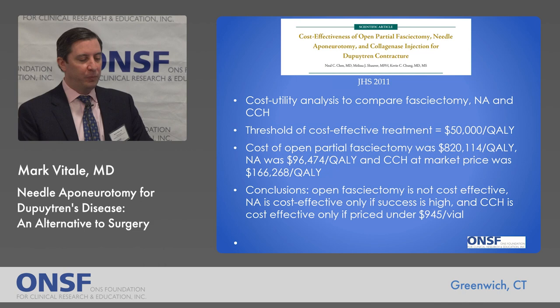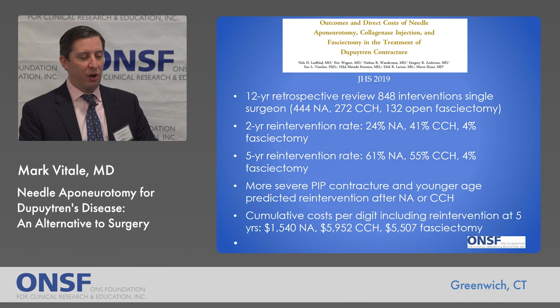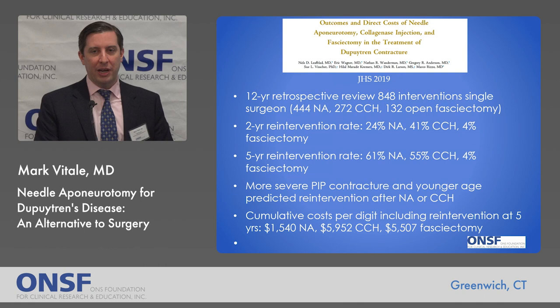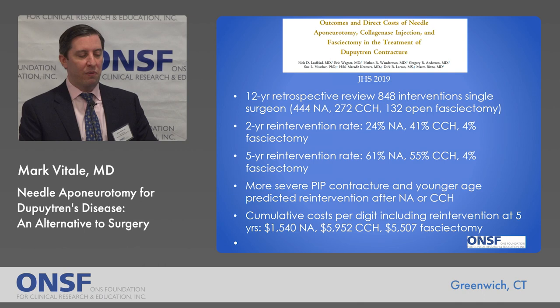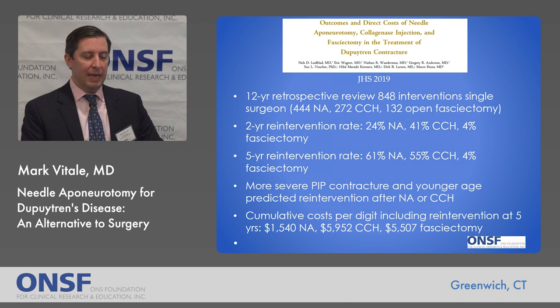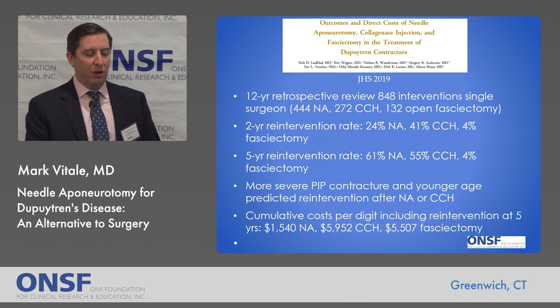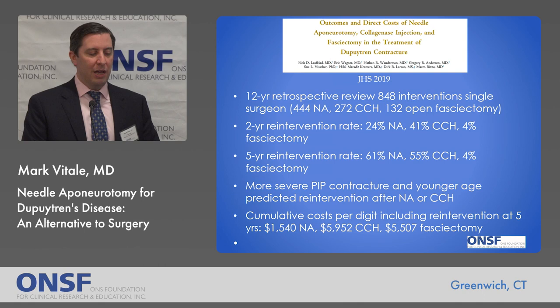Another study done out of the Mayo Clinic with one of my mentors, Marco Rizzo, published in 2019, was a 12-year retrospective review of about 900 interventions including needle aponeurotomy, collagenase, and open fasciectomy. At two years, the re-intervention rate was about 24% with needle aponeurotomy, 41% with collagenase, and only 4% with surgery. More severe contractures at a younger age predicted re-intervention after needle aponeurotomy or collagenase. The cumulative cost per digit including re-intervention at five years was the lowest with needle aponeurotomy at about $1,500, versus about $5,000 to $6,000 for surgery or collagenase.